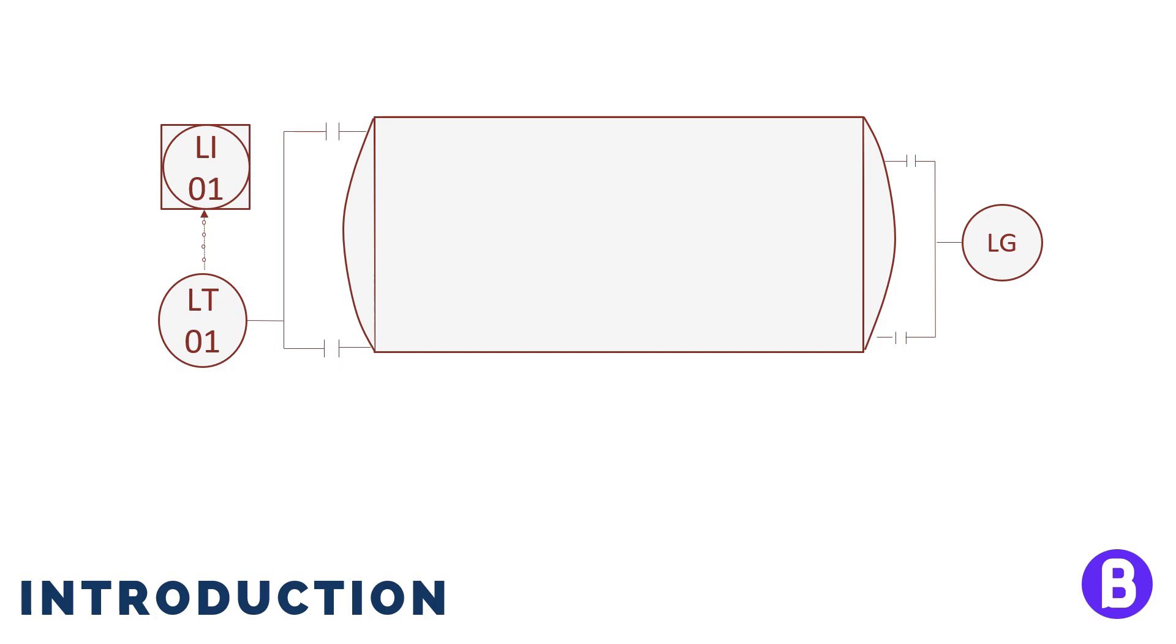And if this level transmitter has a low level alarm, for example, then this shall mean that the operator shall receive an alarm in the control room when the level is below a certain value. Or we shall receive a high level alarm in case the level was above a certain value.